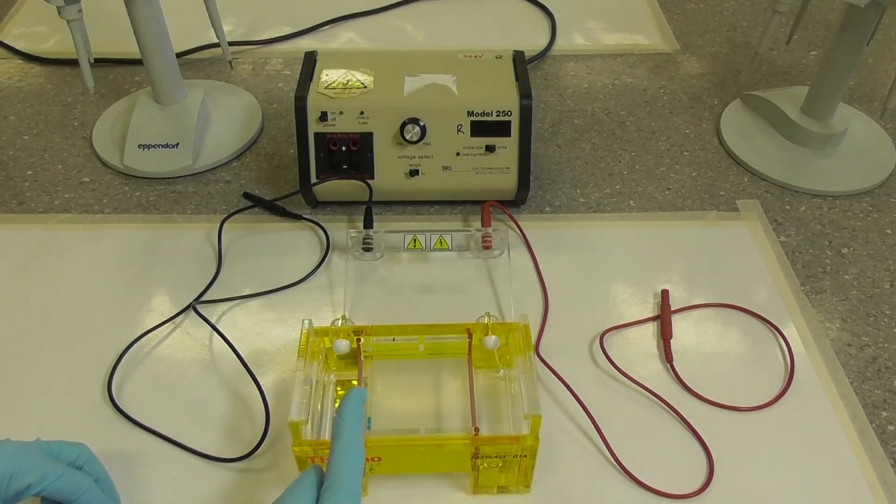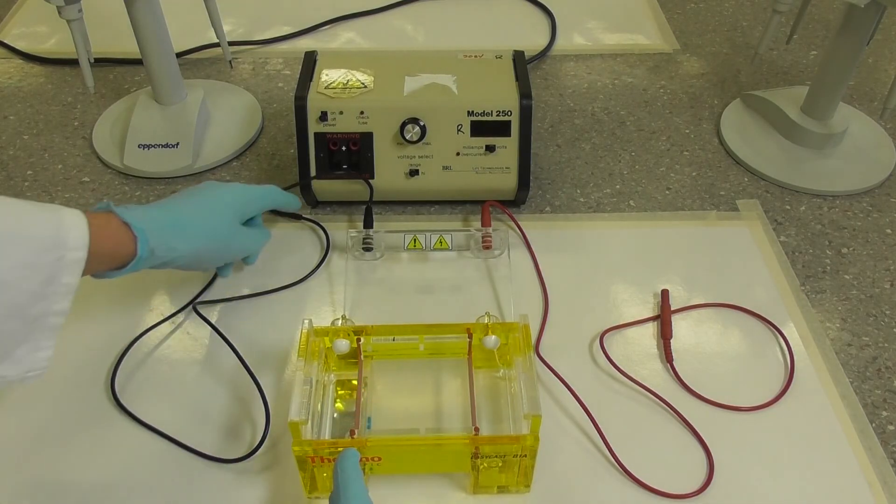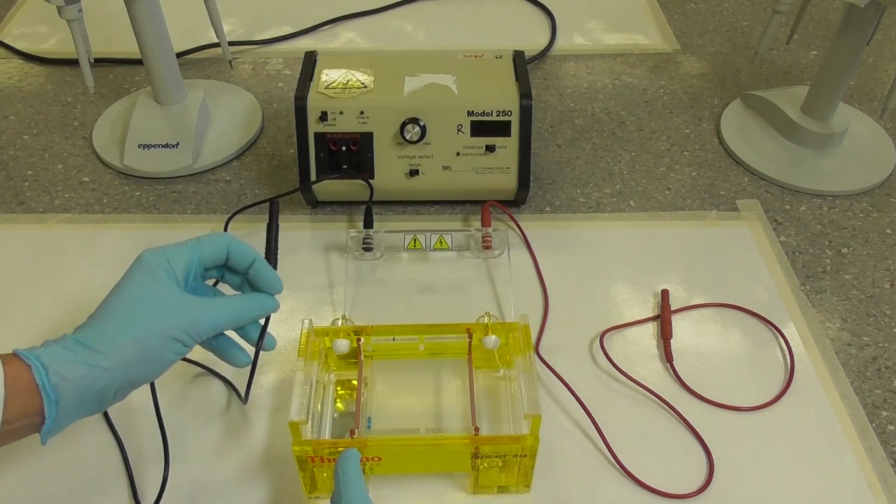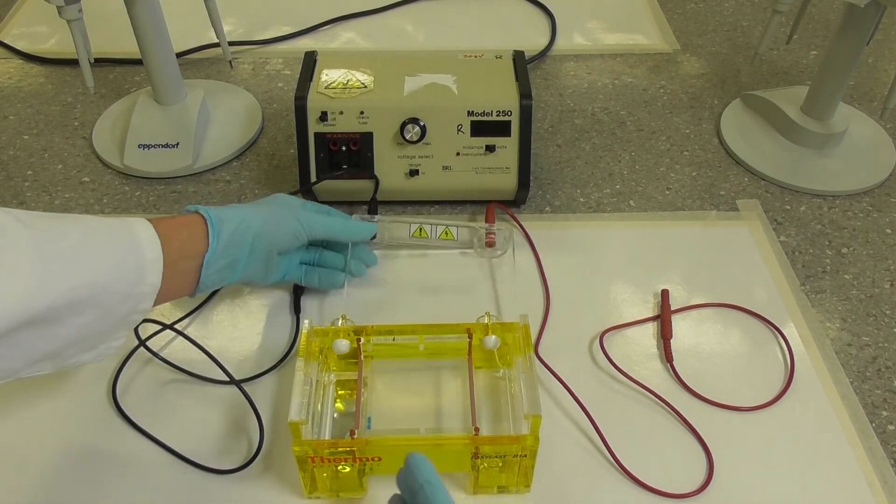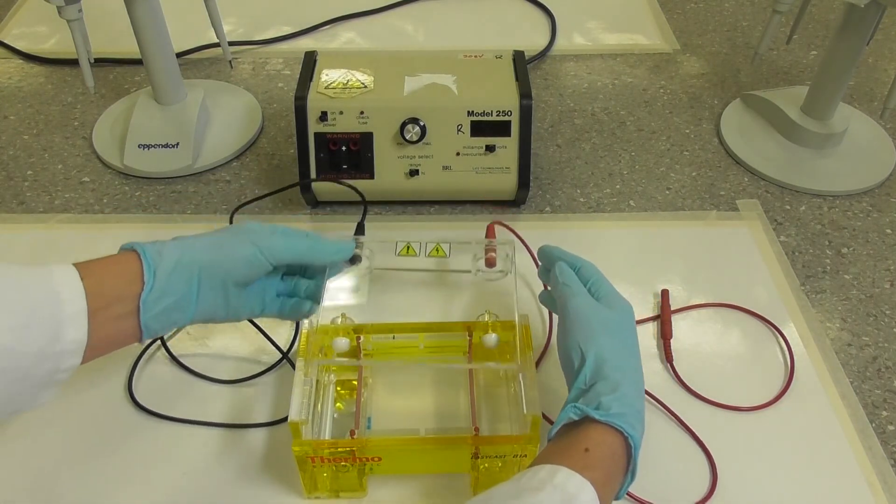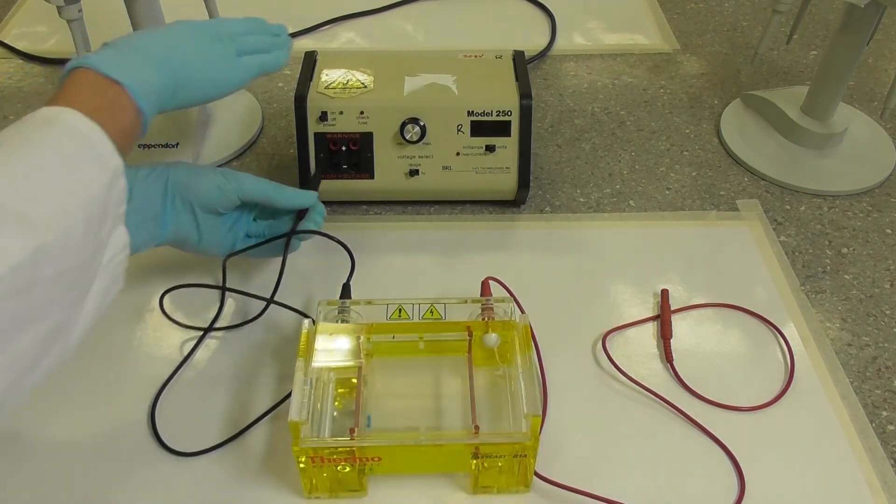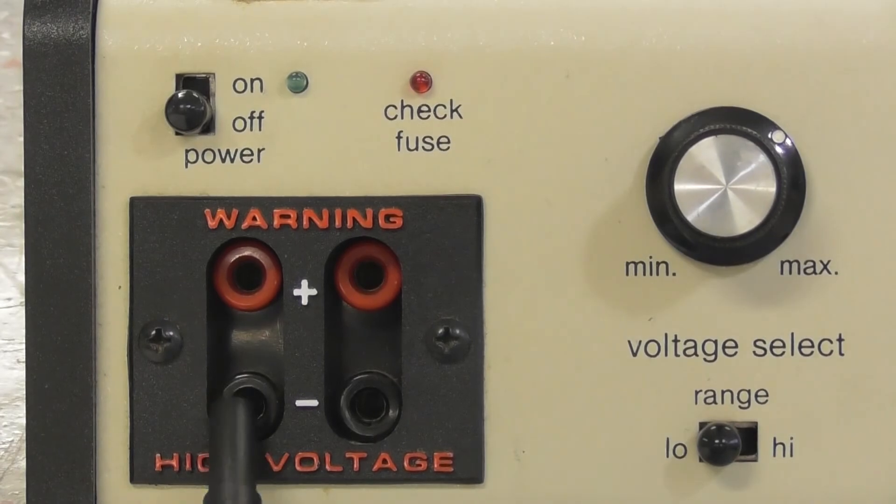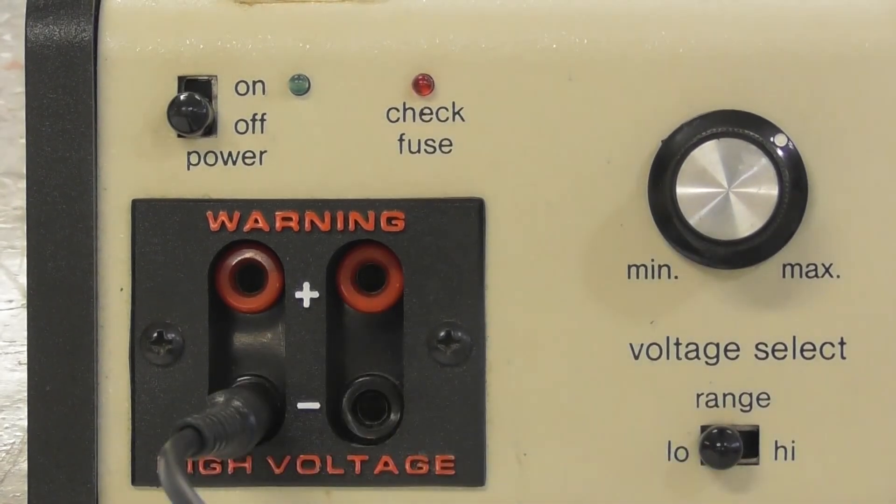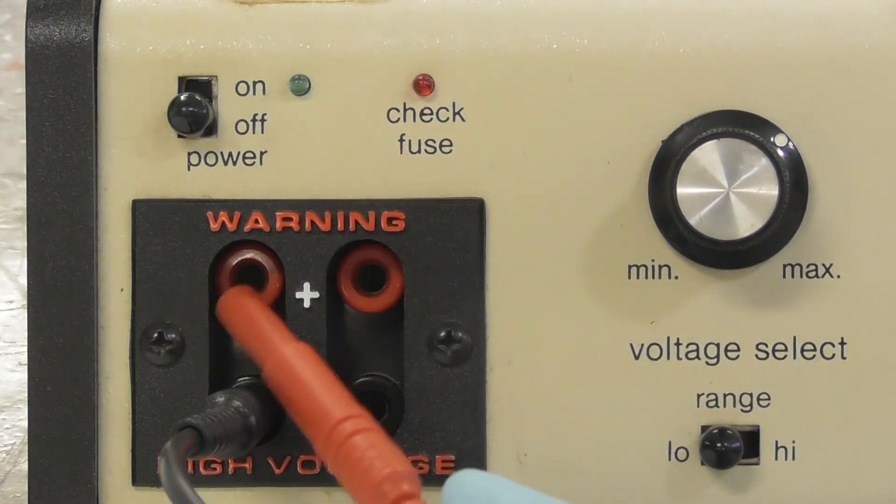Samples will migrate from the negative electrode, which is colored black. Before connecting the power pack, ensure the samples are loaded next to the black electrode. Slide the lid over the electrodes and connect the leads to the power source and turn it on. Ensure the black lead and the red lead are color matched before switching on.